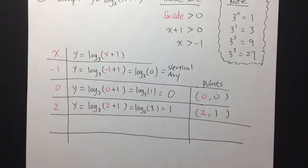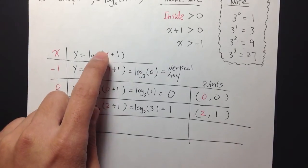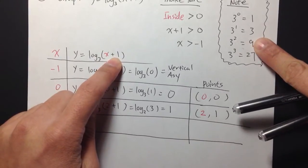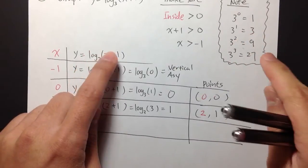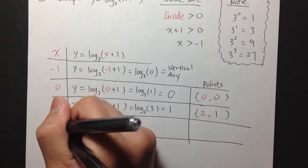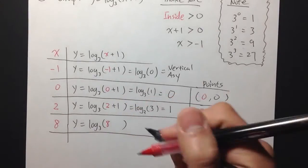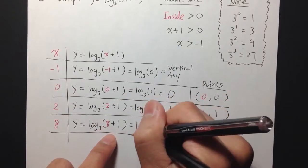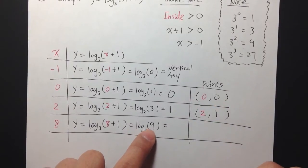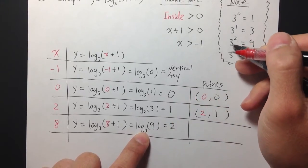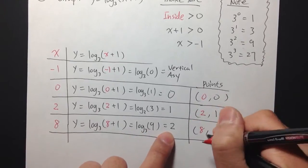For the next point, I need x plus 1 to produce 9 so I get a whole number y value. Since 8 plus 1 equals 9, I'll pick x equals 8. Then y equals log base 3 of (8 plus 1), which is log base 3 of 9. Since 3 to the 2nd power equals 9, the answer is 2. So my third point is (8, 2).